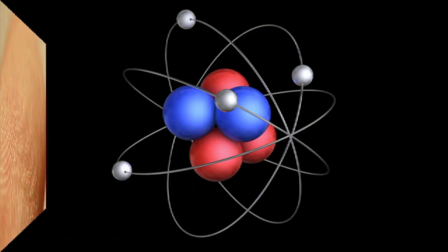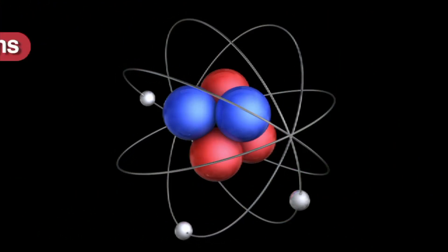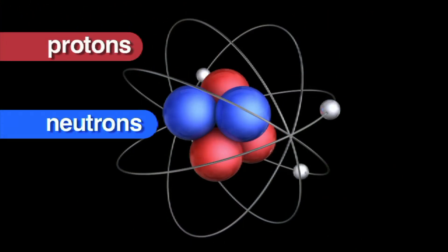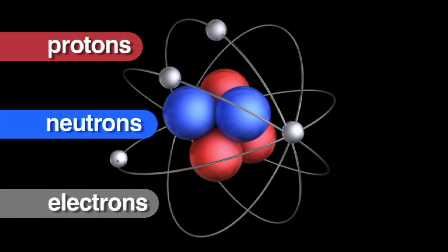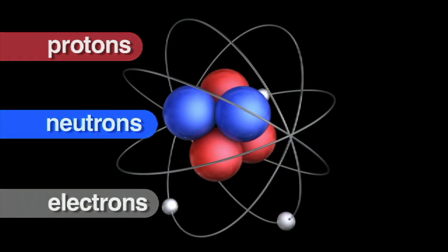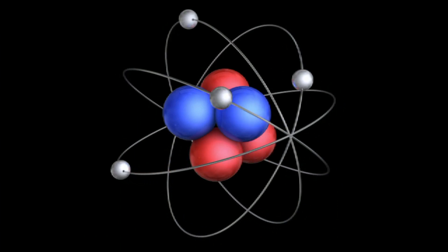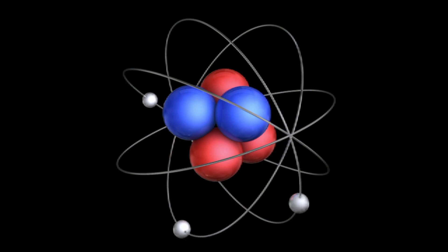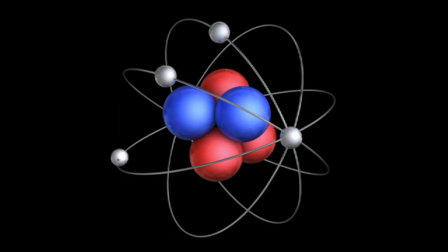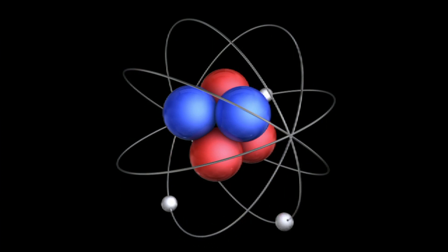All elements have subatomic particles: protons, neutrons, and electrons. There are an equal number of protons and electrons. The number of neutrons may vary. The differing number of protons, neutrons, and electrons is what makes the atoms of each element distinct.